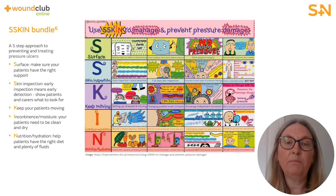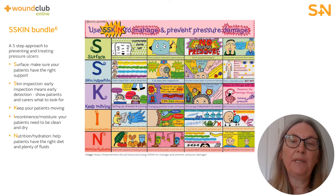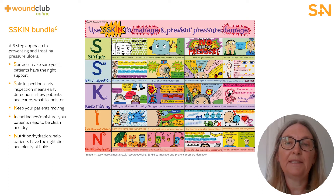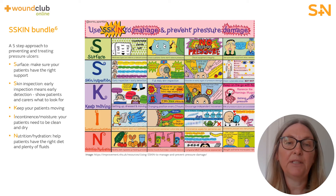The Eskin model has a five-element approach to countering risks of likely pressure ulcer damage. These are: Surface, Skin inspection, Keep moving, Incontinence and moisture, and Nutrition and hydration. Pressure ulcers can develop in all age groups and in all care settings and, if not identified early, can develop into significant deep tissue injuries. The use of risk assessments can help identify those patients that require interventions to mitigate the risk of a pressure ulcer developing.